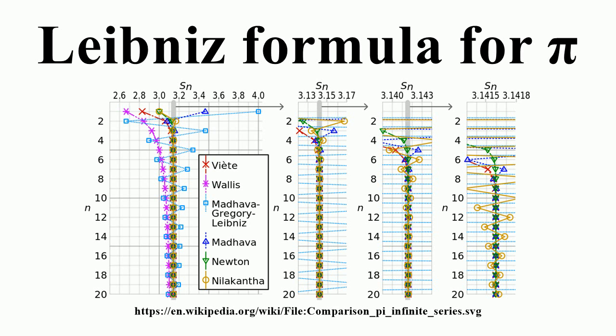Liebner's formula converges extremely slowly. It exhibits sublinear convergence. Calculating pi to 10 correct decimal places using direct summation of the series requires about 5 billion terms. However, the Liebner's formula can be used to calculate pi to high precision using various convergence acceleration techniques.